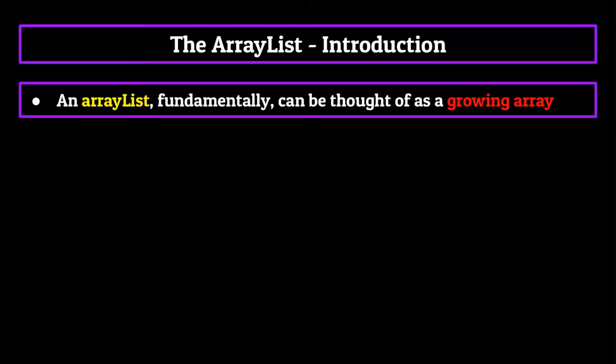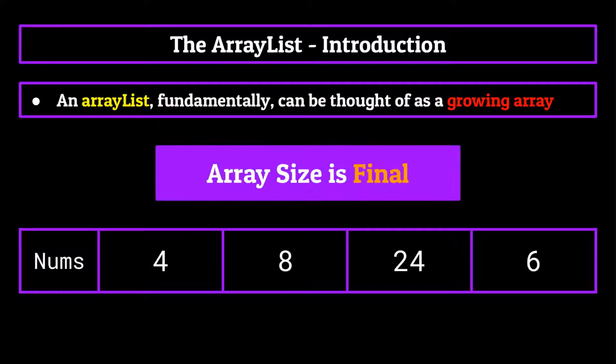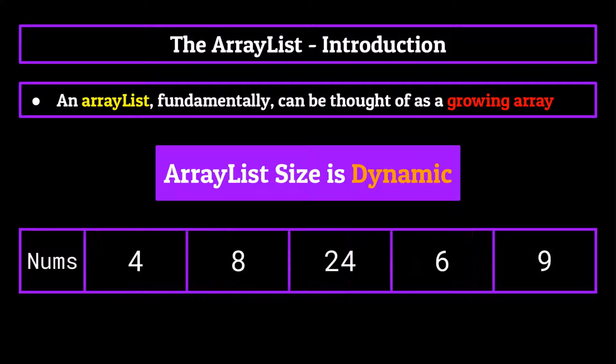Now, an ArrayList fundamentally can be thought of as a growing array. Previously, we talked about the array and how one of the main drawbacks to it was the fact that once it's initialized, an array's size could not be changed using conventional methods. Well, in contrast, an ArrayList's size can expand as the programmer needs. If you take the ArrayList on the screen now, full of four elements, and you decide to add one to it, it will simply expand its size to fit five elements.